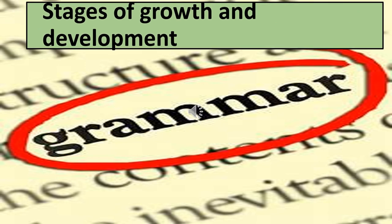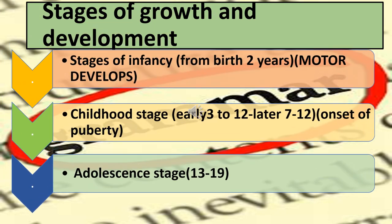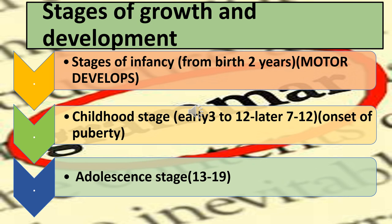Now let's move to the stages of growth and development. The first stage is the stage of infancy, which is zero to two years. In this stage, the child's motors develop — the muscles. The child learns to walk and sit; muscular changes occur. Next comes the childhood stage, which has two parts: early childhood (three to six) and later childhood (seven to twelve). In seven to twelve, the onset of puberty begins.